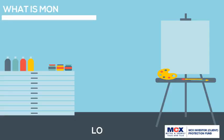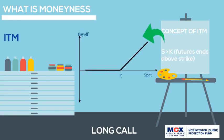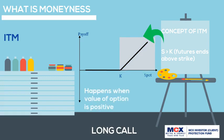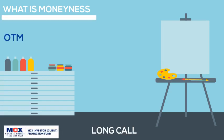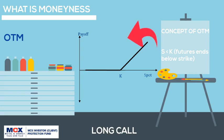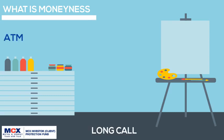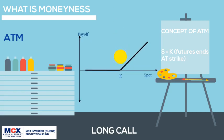Let's understand the concept of moneyness. The first concept is in the money, called ITM — an option ends in the money when the underlying contract price ends above the strike price, meaning the value of the option at expiry is positive. The concept of out of the money, called OTM, kicks in when the underlying contract price ends below the strike price — the value of the option becomes 0, as shown in the gray shaded area. Finally, an option ends at the money, called ATM, when the underlying contract price ends at the strike price — here also the value of the option is 0.